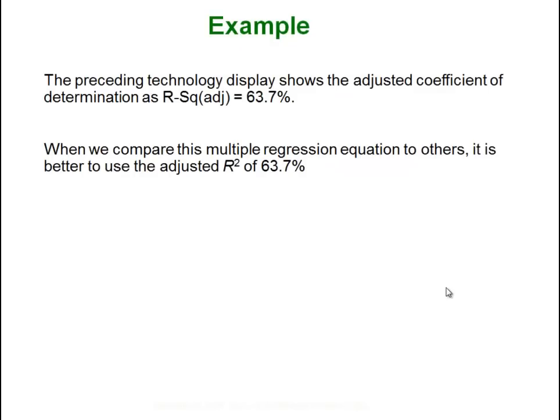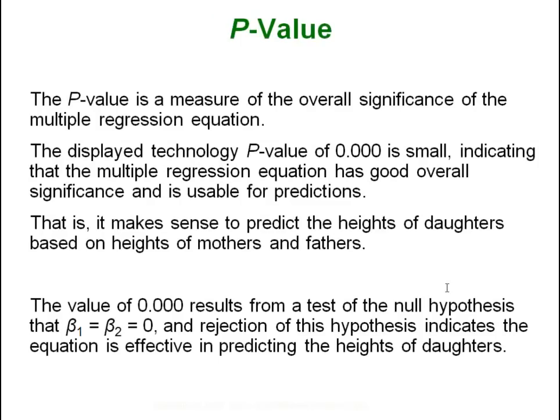From the preceding results we got a modified adjusted one of 63.7%. When we compare this multiple regression equation to others, it's better to use the adjusted R² versus the regular one—it just gives us a more comparable measure. The p-value is the measure of the overall significance of our equation. Because we got a zero, which is really small, this indicates that the regression equation has a really good overall fit and is usable for predictions.